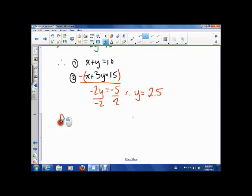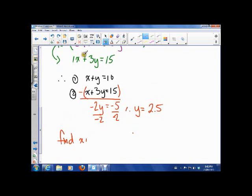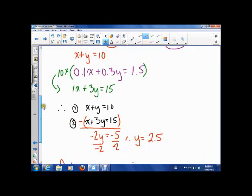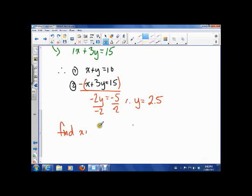So, now we need to find out what x is. And, the way to do that is we can plug it into that equation right there. It's the easiest. x plus y equals 10. So, that means x plus 2.5, which is our y, is equal to 10. So, that means x is equal to 10 minus 2.5, 7.5.